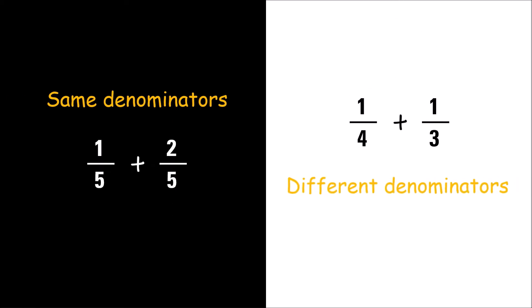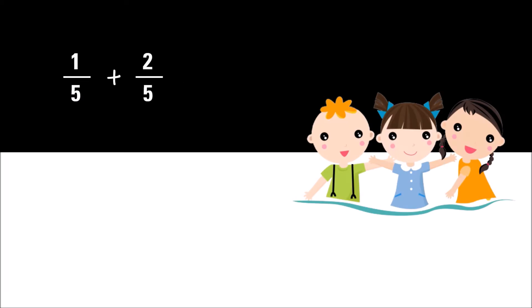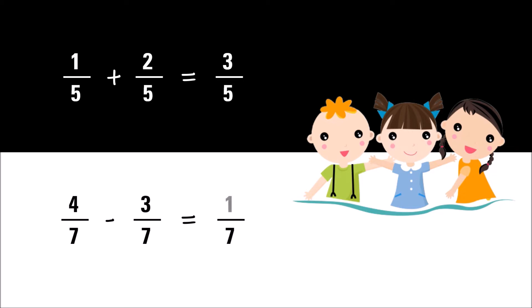Since we follow different steps in each case, add or subtract numerators only while the denominator will remain the same. This is the general rule in adding and subtracting fractions. This is applicable only if the fractions have the same denominator. Those fractions which have the same denominators are called like fractions.